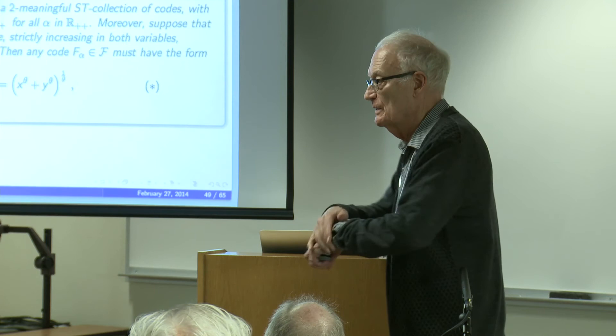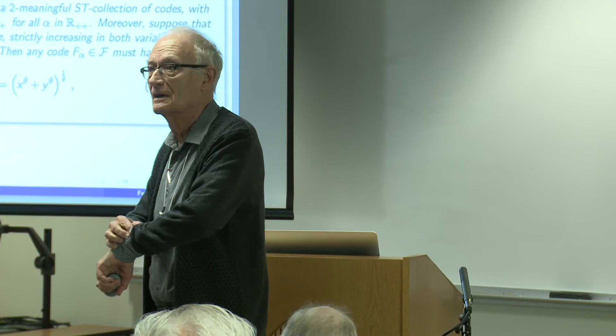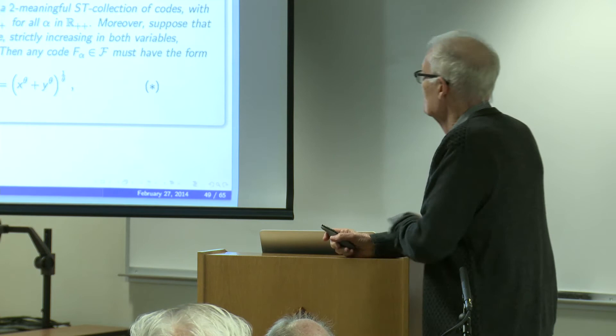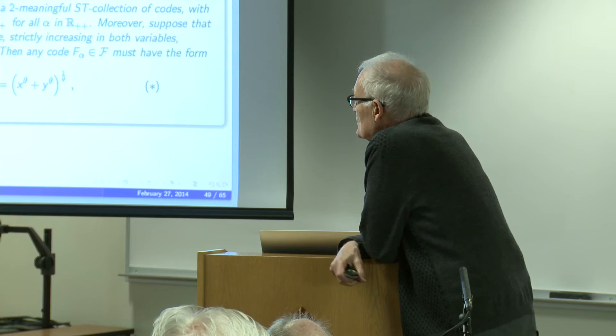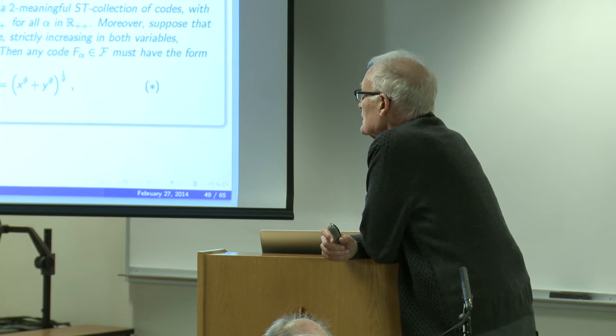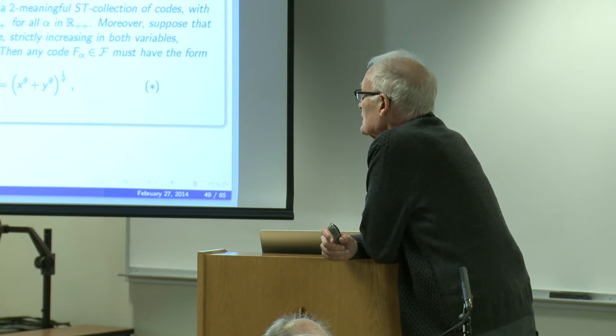Here is our first theorem. We assume meaningfulness, solvability, symmetry, and associativity. Then there must exist a positive constant θ such that F_α(x,y) = (x^θ + y^θ)^{1/θ}. Let's prove that, because the mechanics of the proof are the same for almost all these theorems.